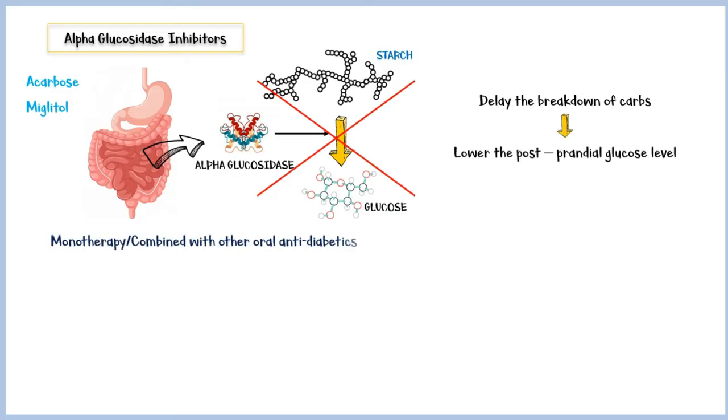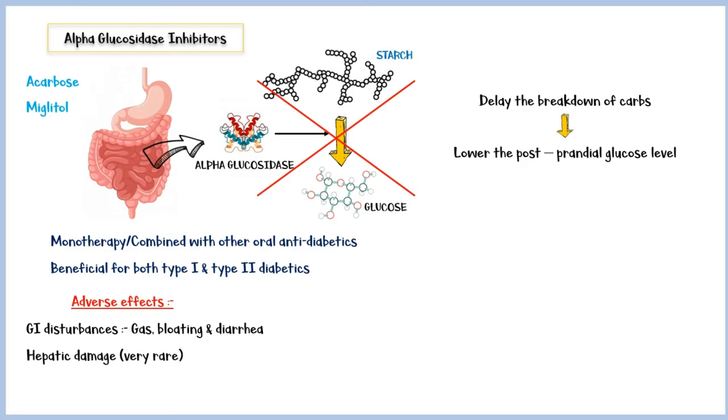They can be used alone or can be combined with other oral anti-diabetic agents. Unlike the other two classes of drugs we discussed so far, alpha-glucosidase inhibitors can be used to treat both type 1 and type 2 diabetes. Common side effects include GI disturbances such as gas, bloating, and diarrhea. And very rarely, hepatic damage.